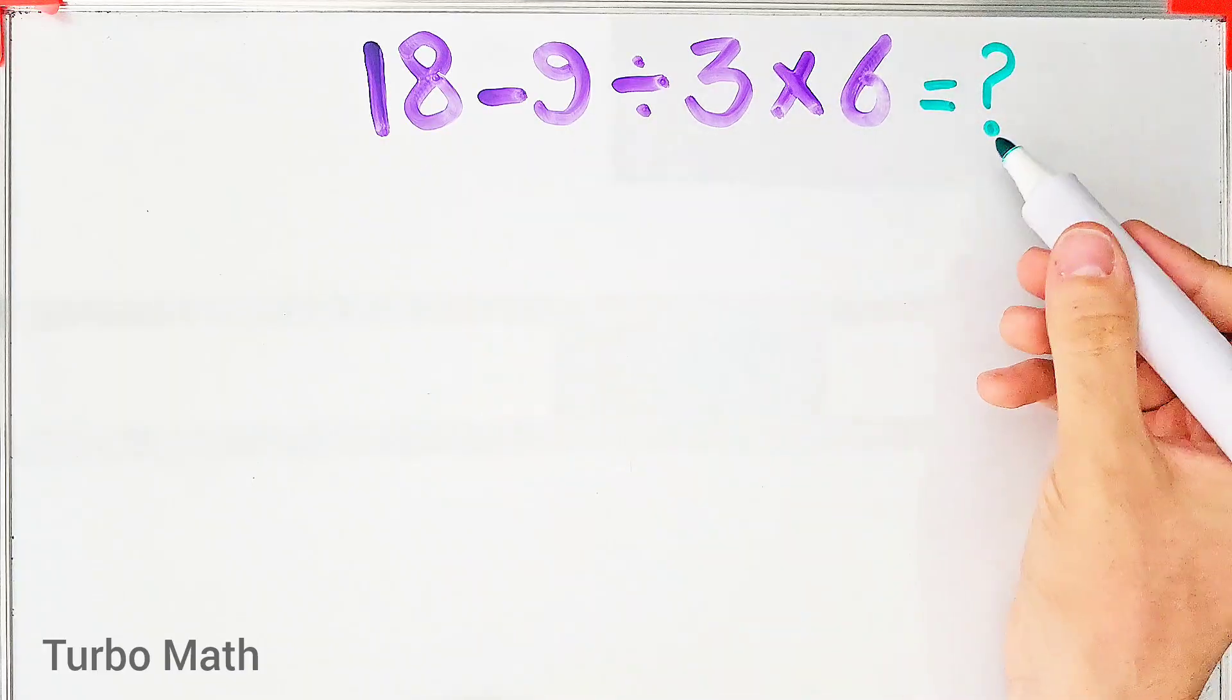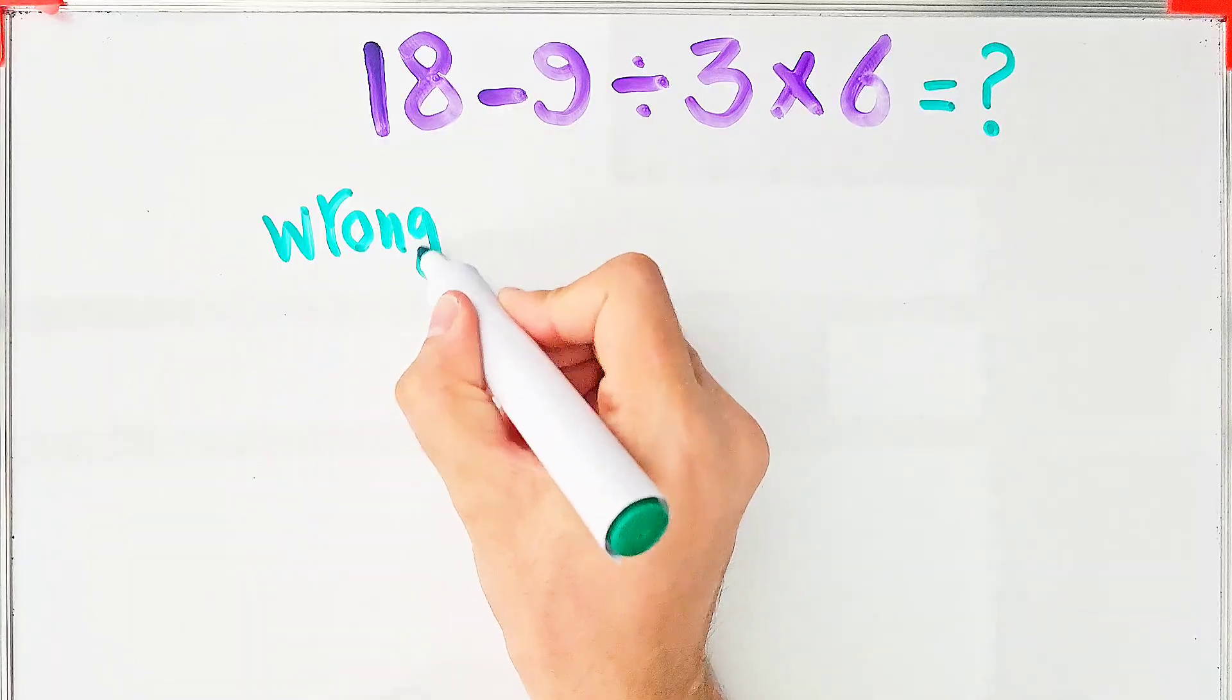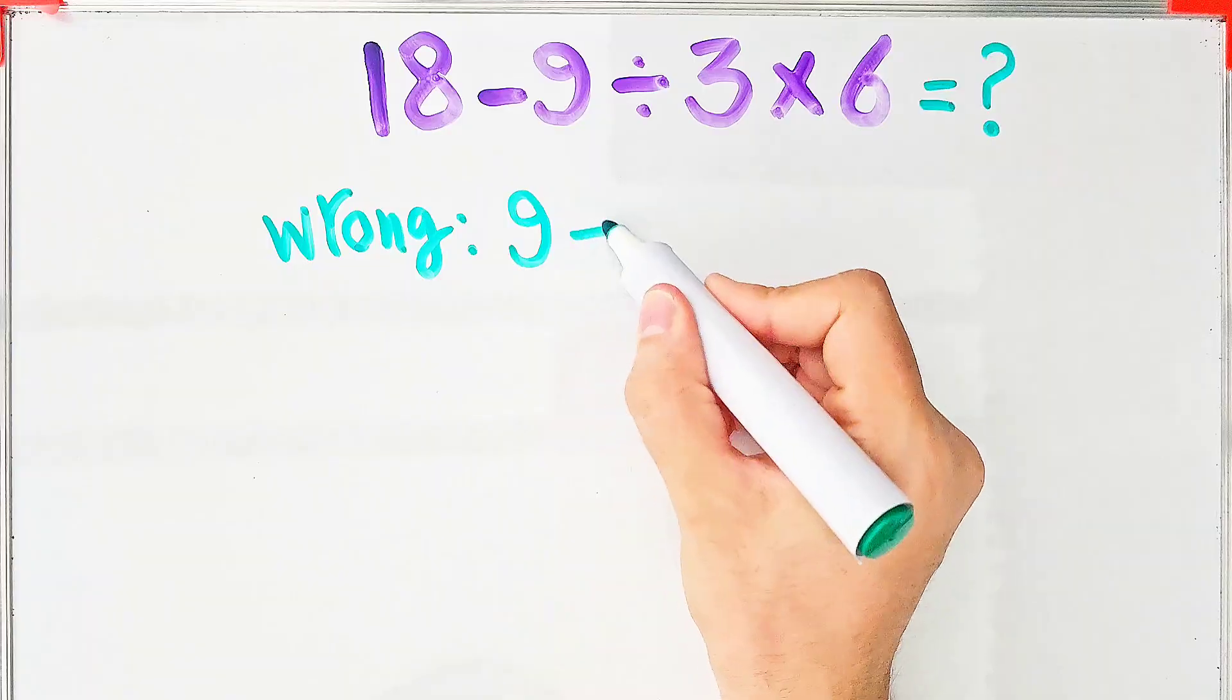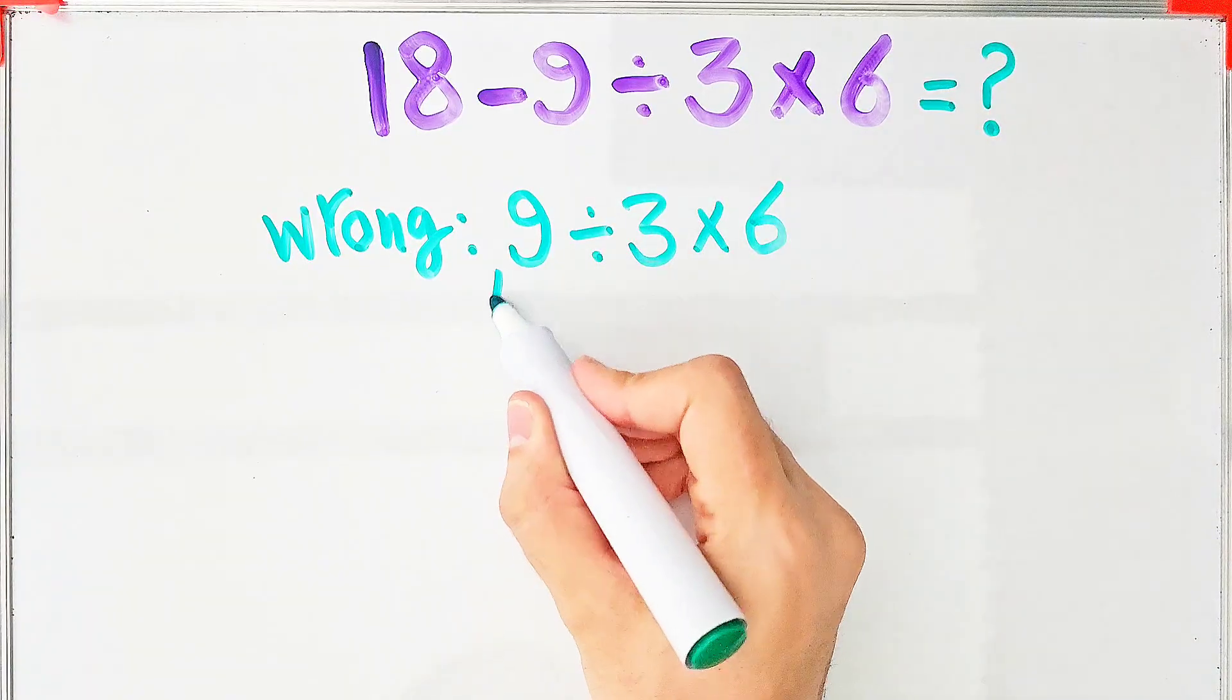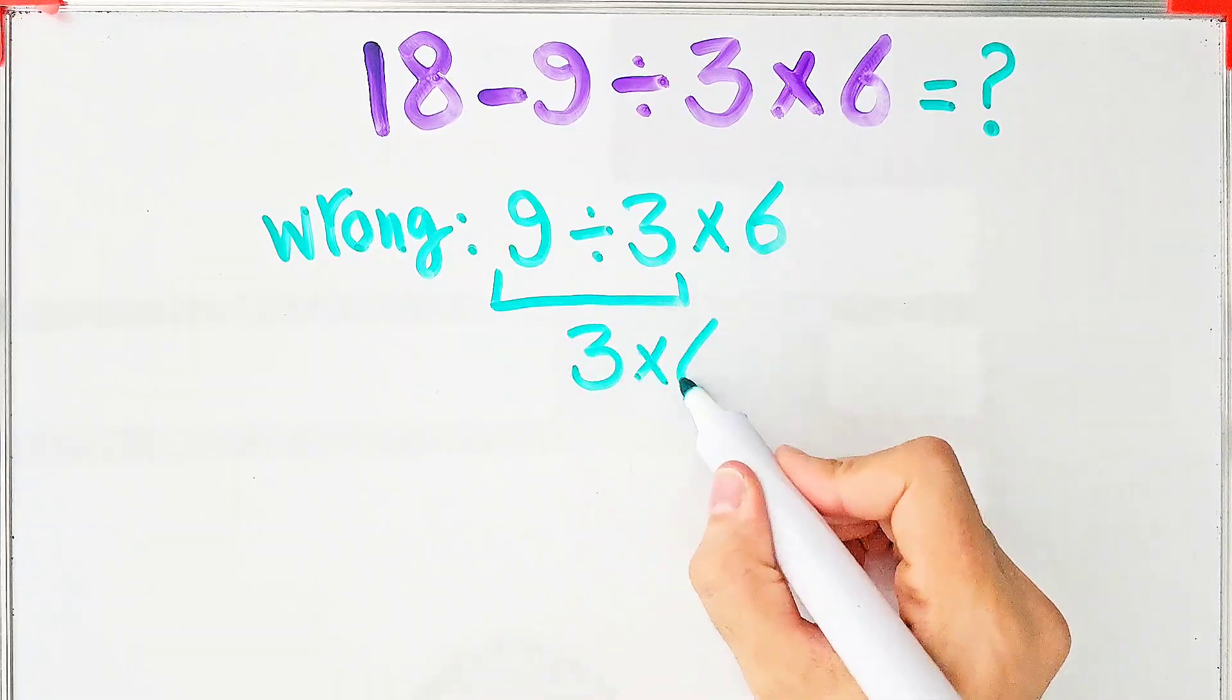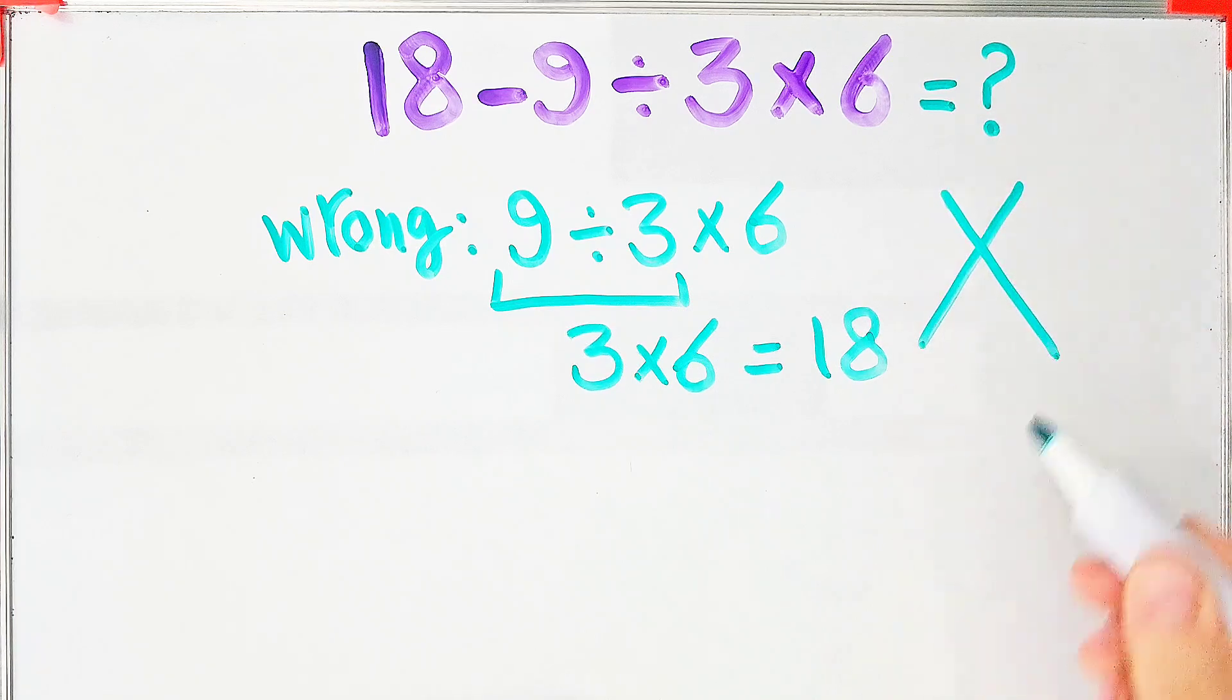In the wrong way of solving this question, some people start from the left and don't pay attention to the priority of the mathematical operations. 18 minus 9 equals 9. 9 divided by 3 then times 6. 9 divided by 3 equals 3 and 3 times 6 equals 18. They say the final answer of this question equals 18, but this answer is definitely wrong.